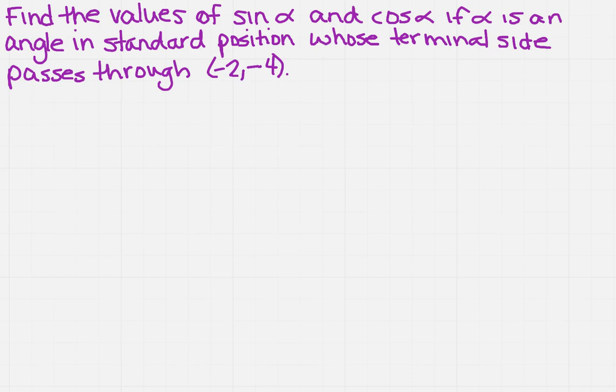I know that my formulas for sine of alpha equal y over r, and for cosine of alpha, it's x over r. I have a point here that is x and y, so what am I missing? I'm missing r.